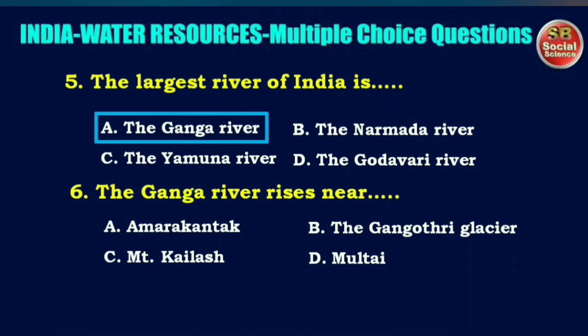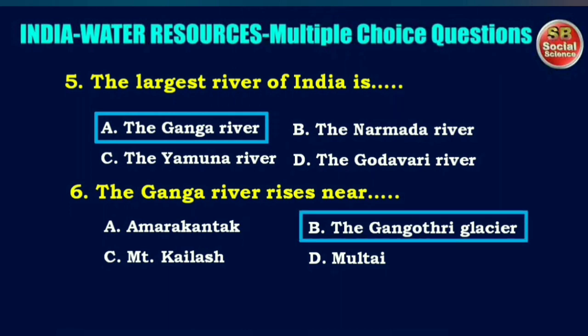The Ganga River rises near — options are Amarkantak, the Gangotri Glacier, Mount Kailash, or Multai. The right answer is option B: the Gangotri Glacier.